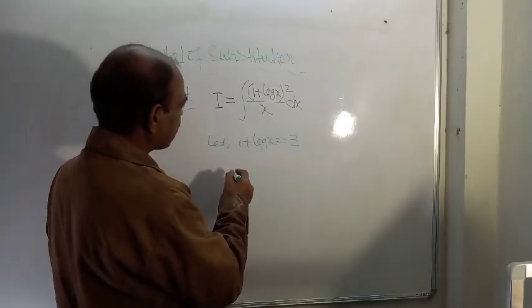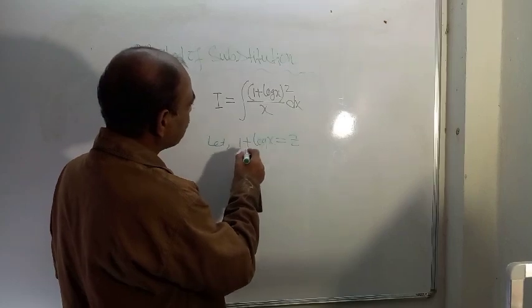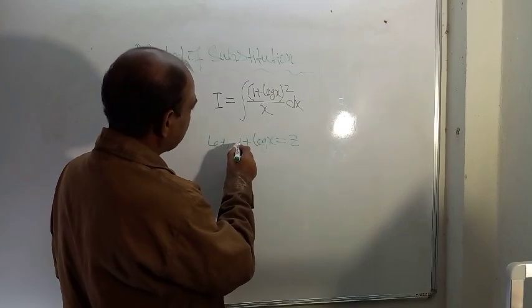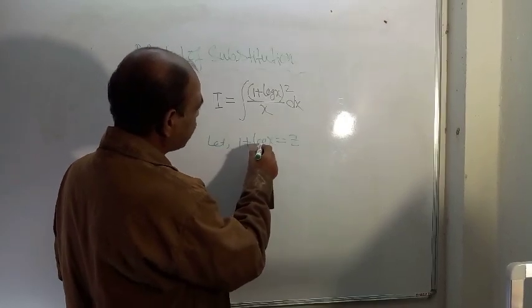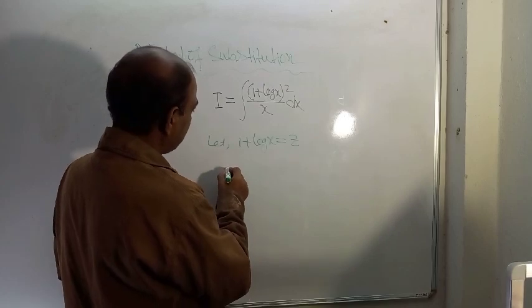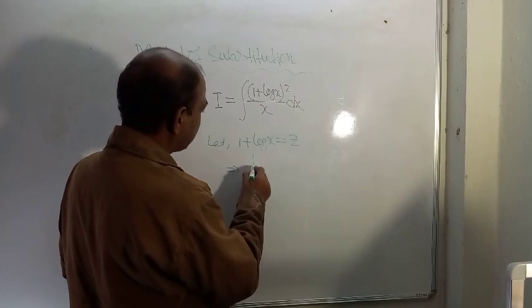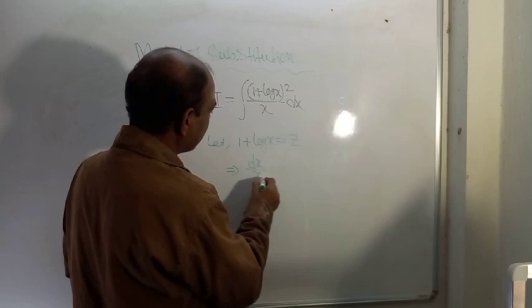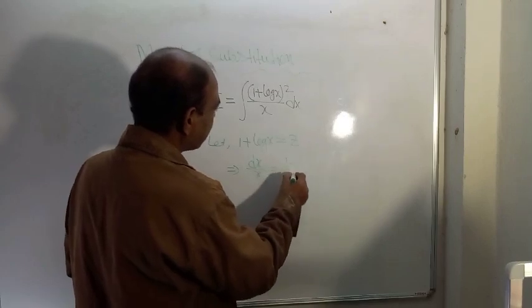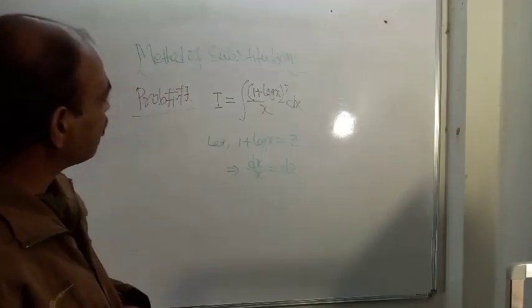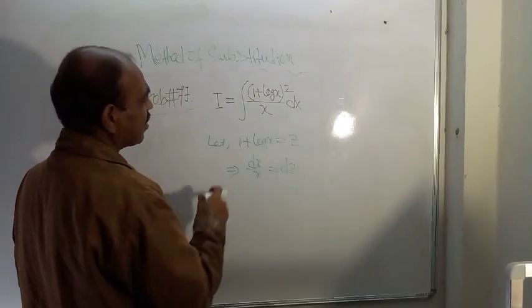Then derivative of this. Derivative of this is what? Derivative of this is 0 and derivative of log x is 1 by x. So here you are getting dx by x is equal to dz. And you can see that dx by x is there.